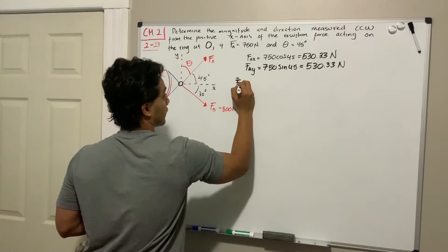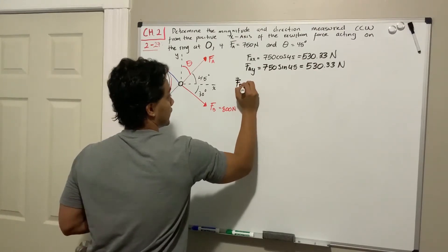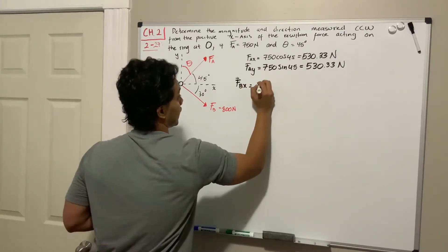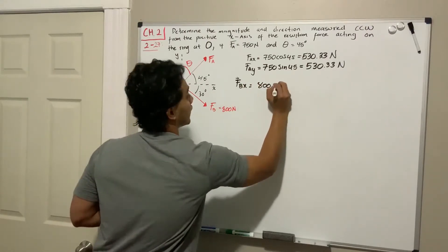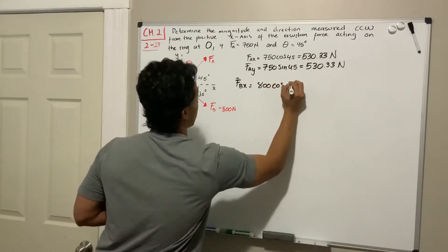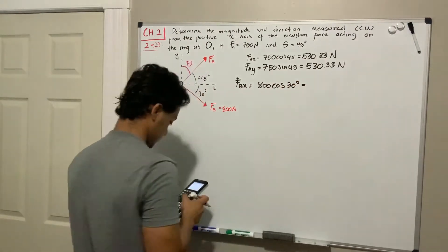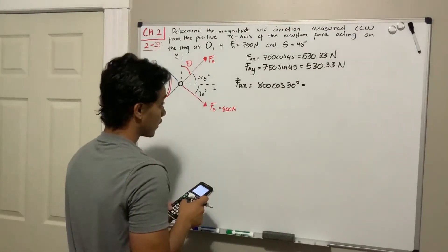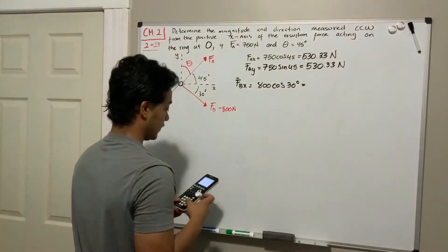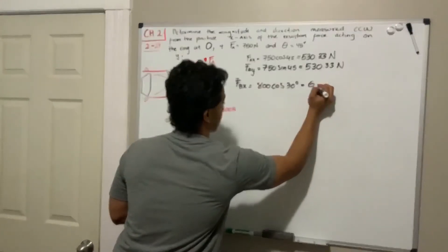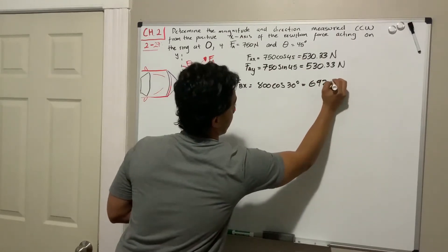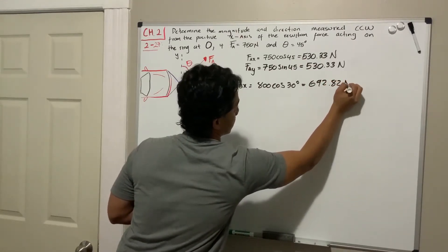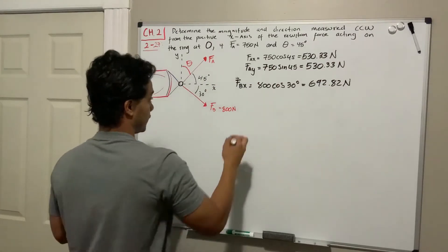Let's do F_B. F_B in the x-direction is going to be 800 multiplied by the cosine of 30 degrees, which is 692.82 N.